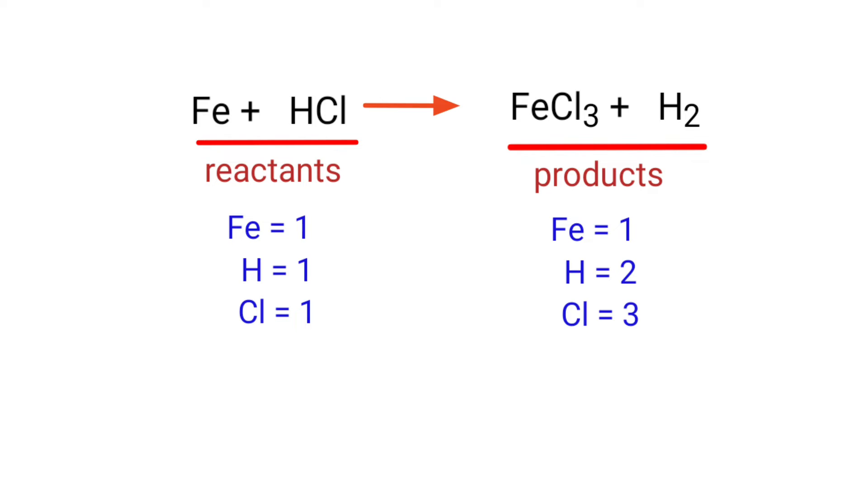On the reactants side, there are one iron atom, one hydrogen atom, and one chlorine atom present. On the products side, there are one iron atom, two hydrogen atoms, and three chlorine atoms present.